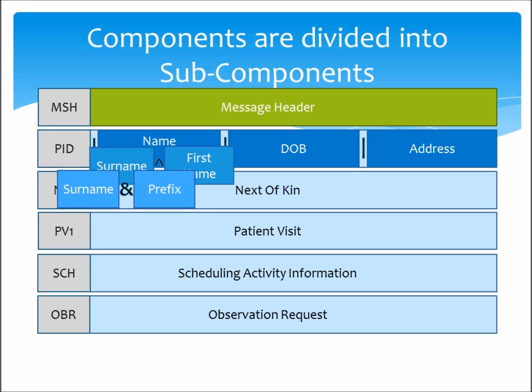A common workaround is to address the lowest possible address for the value that you're after. So for example, in the actual HL7 message, you would address the patient's first name as PID 5.2, as there are no subcomponents for first name. But you would address the surname as PID 5.1.1, to avoid any confusion between the two possible locations for the surname value.